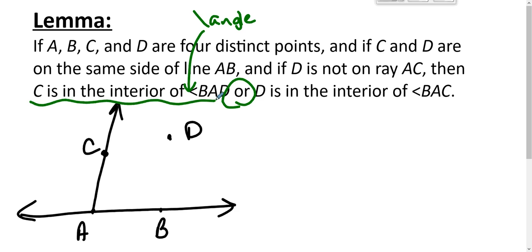Okay, so we're trying to prove a conclusion with a disjunction, so we assume that this doesn't happen and show that that does. We assume that this does not happen—C is not in the interior of angle BAD—and we show that D must be in the interior of angle BAC.